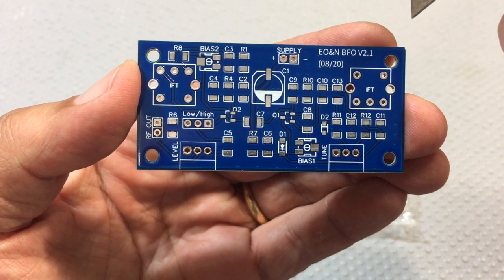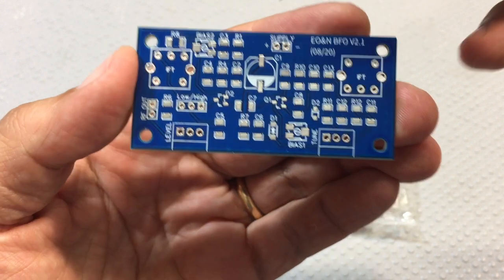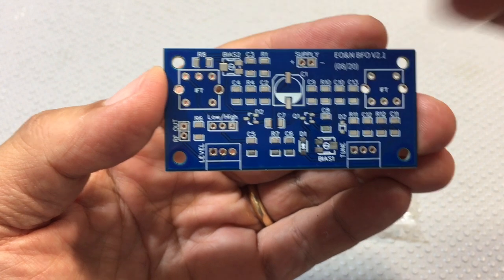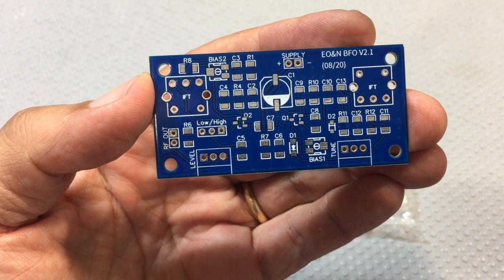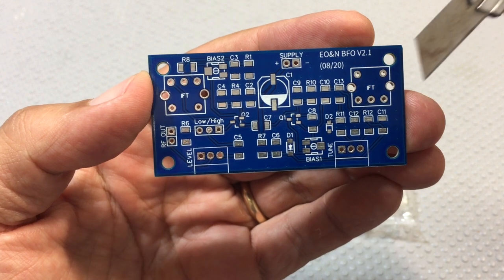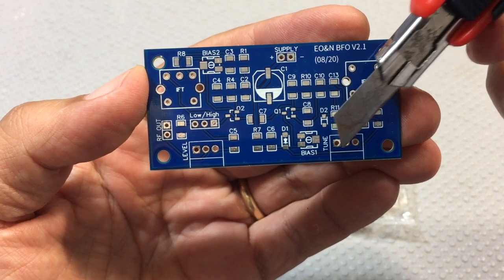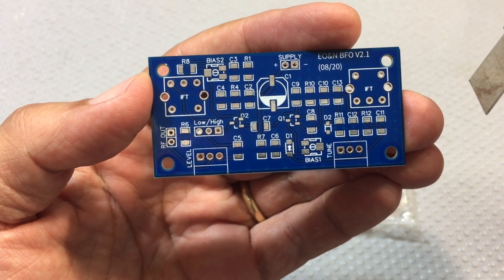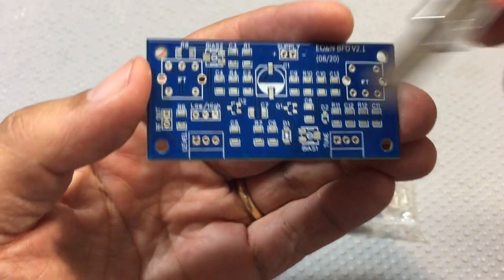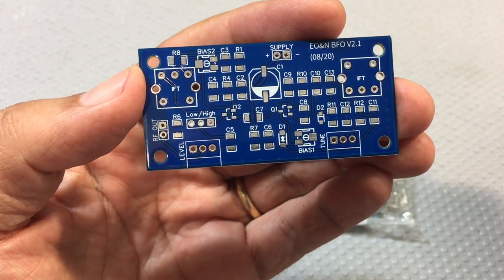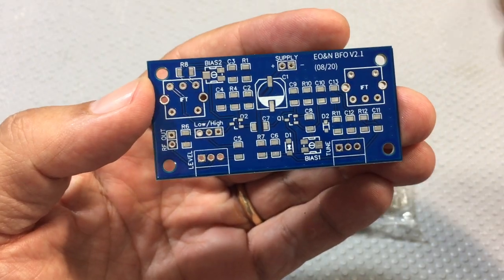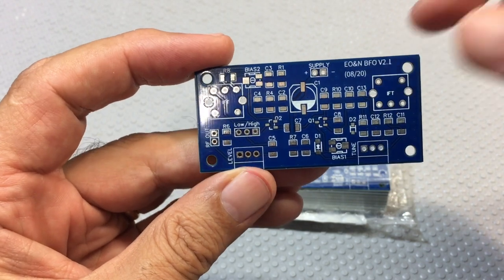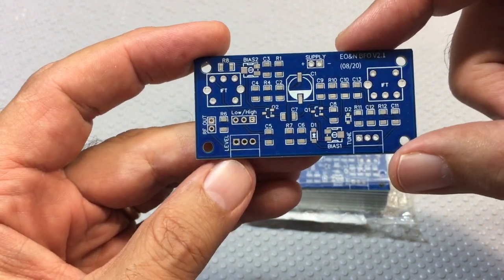I've never used these trim pots SMD versions so it'll be interesting to see how they work. Everything else is pretty standard. The IF transformers are exactly the same ones that I used in the last build. The trimmers or the tune pots and the level pot are from Bourns, they're very small and they fit perfectly on this layout. I'm going to do this thing rather quickly, start soldering and show you an intermediate step and then the final result.